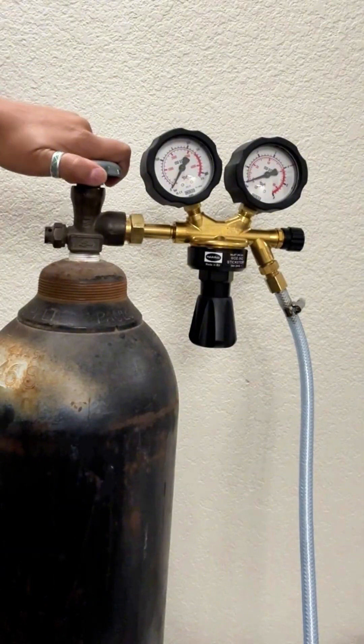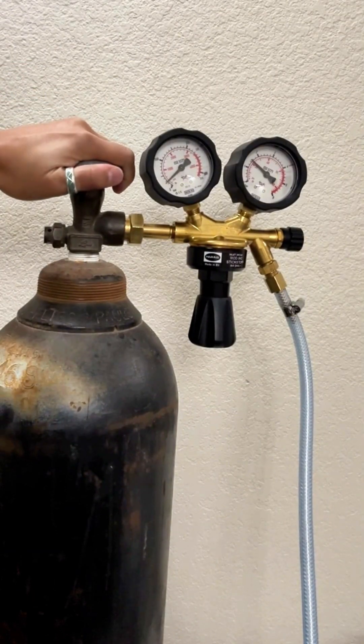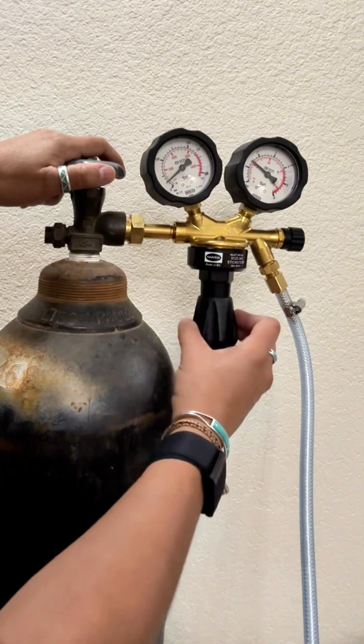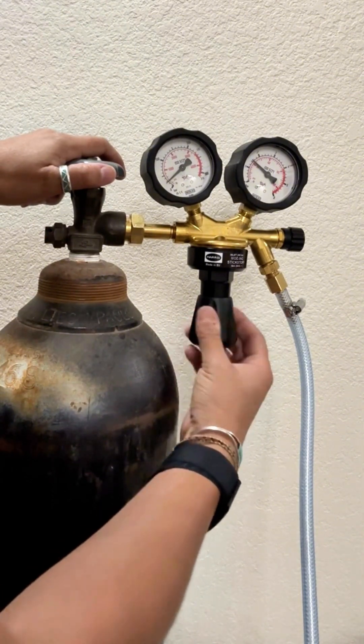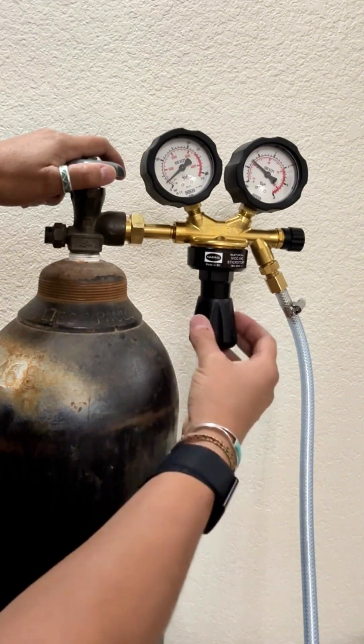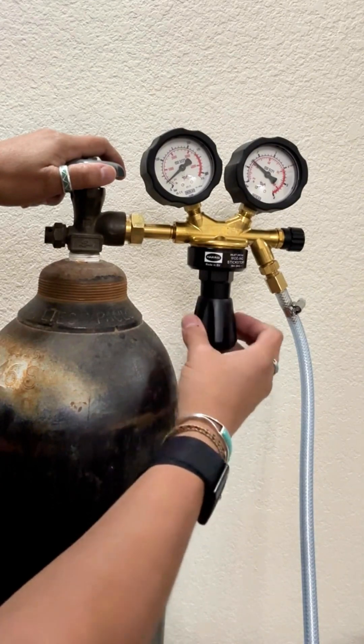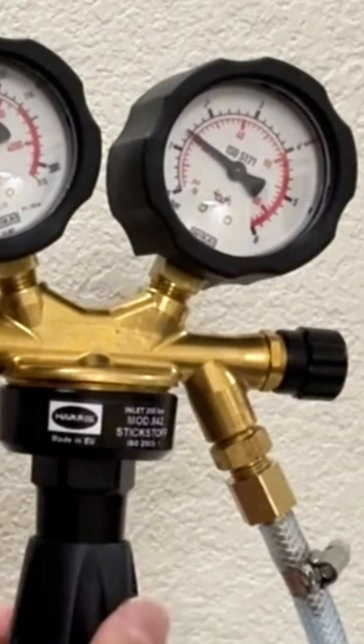Next, open the nitrogen tank, then check the gauge on the right to see how much pressure is coming out of the regulator. Adjust the pressure to 1.2 bar by turning the black knob. Clockwise decreases pressure, while counterclockwise increases pressure.